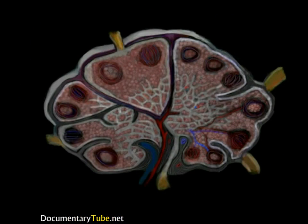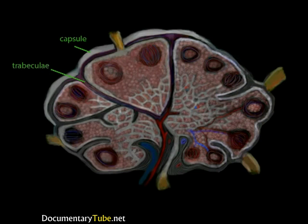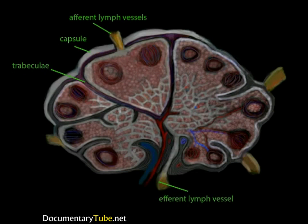The spleen is roughly the size of a clenched fist. Unlike lymph nodes, the capsule or outer cover of the spleen contains smooth muscle tissue. Extensions of this capsule, called trabeculae, make up the skeleton of the node. The lymph nodes are fed by several afferent lymph vessels, but lymph exits through just one efferent lymph vessel. Reticular fibers extend from the trabeculae, forming a net of connective tissue throughout the lymph node.